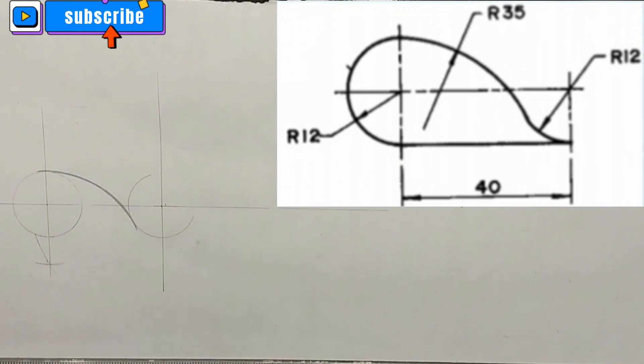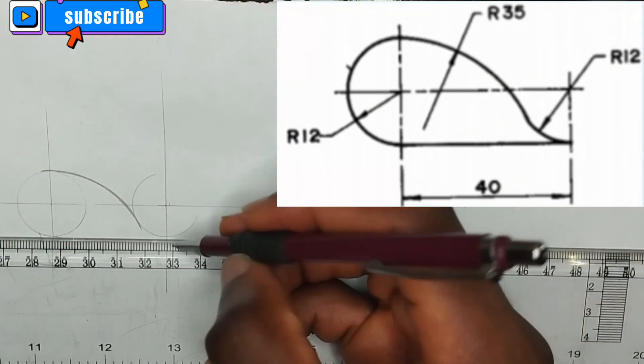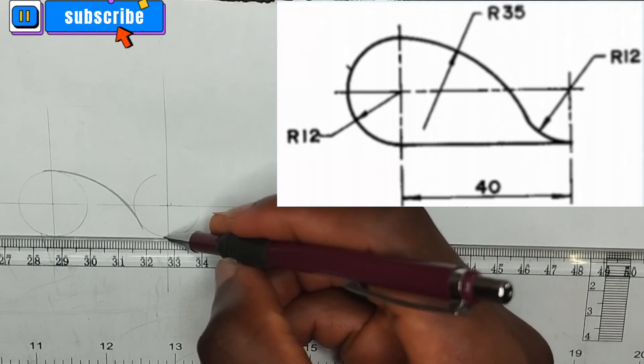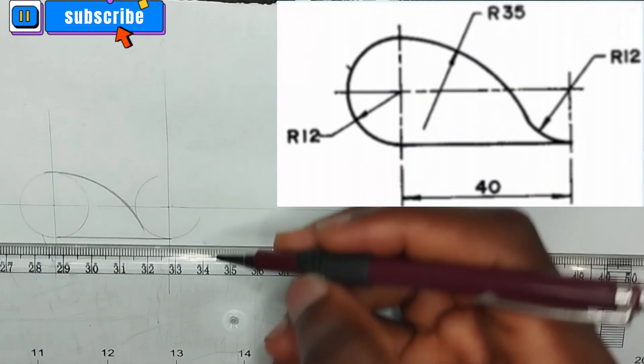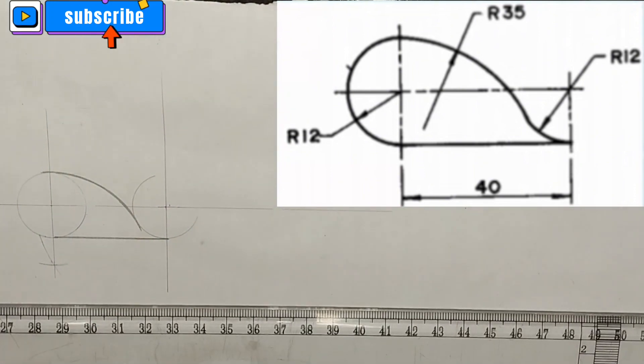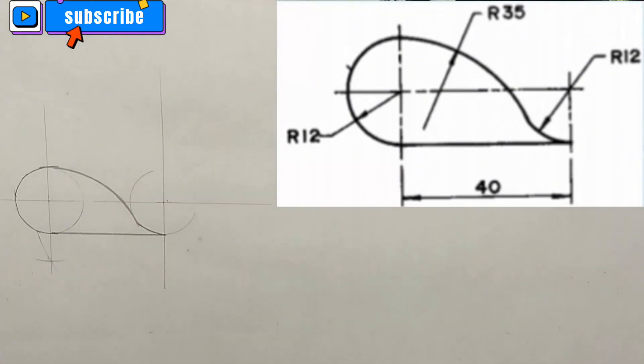So, now I'm going to be joining the bottom of these two particular circles like this together. Now I'm going to thicken out the needed parts. So I've solved the tangency problem on the screen.